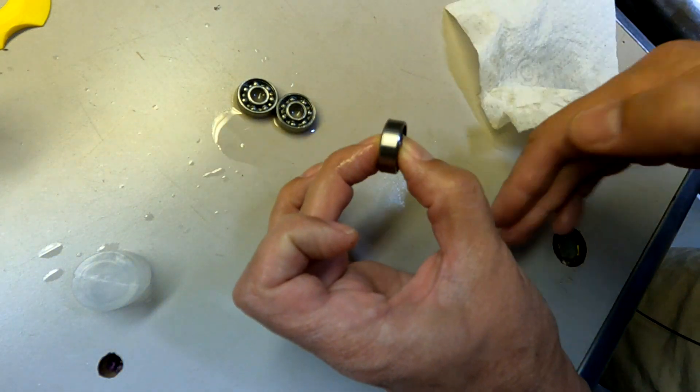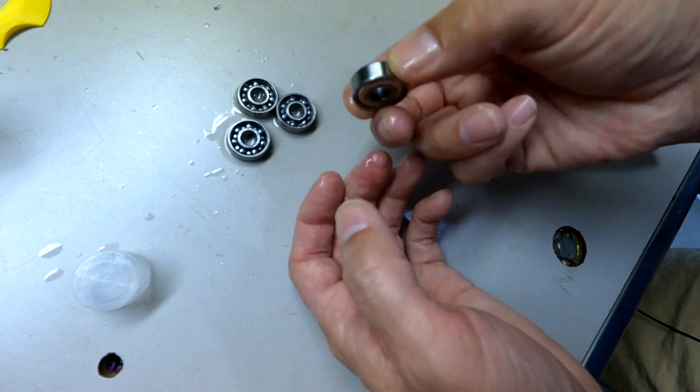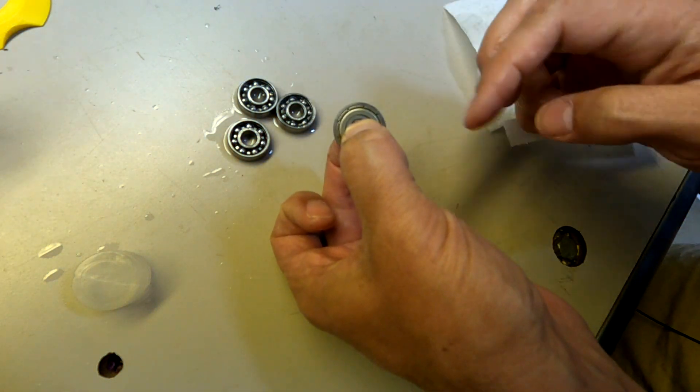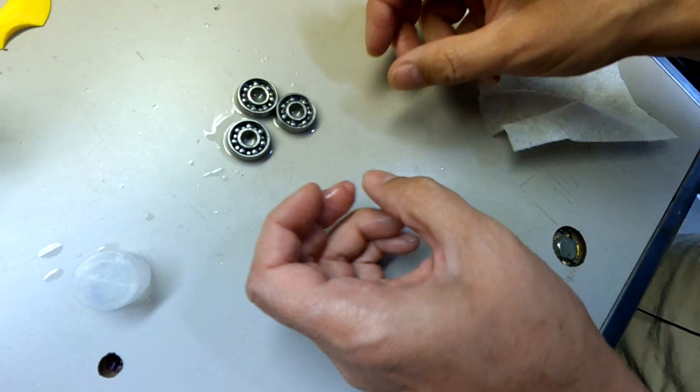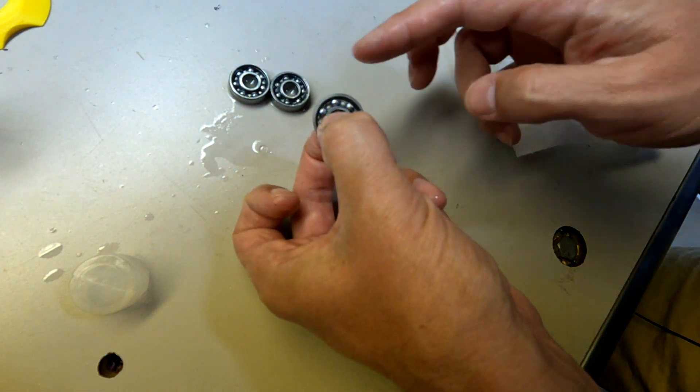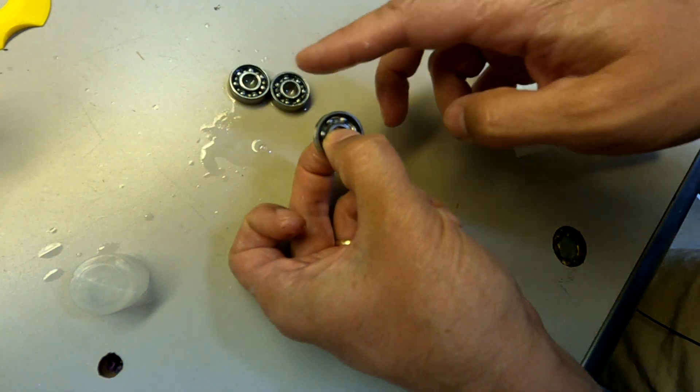A bearing that still has the side shields on it and the grease inside, it doesn't spin hardly at all. It's really necessary to get a low friction stand to remove the side shields and take out all the grease.